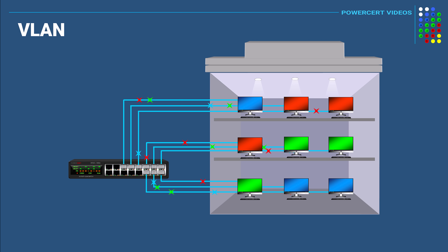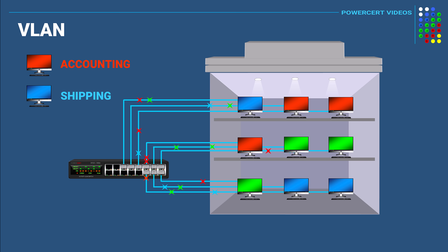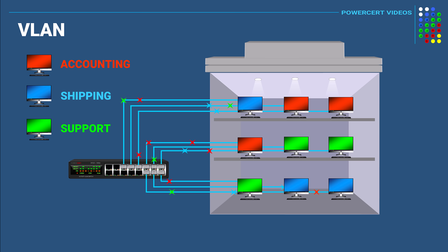So as an example, let's say that you have a three-story office building. In this building you have computers that belong to certain departments that are mixed in with other computers that belong to other departments on the same floor. The red computers represent the accounting department, the blue computers represent the shipping department, and the green computers represent the support department. All these computers from these different departments are all connected to a switch, and they are all on one segment on a local area network or LAN. So all the network broadcast traffic from the different departments are mixed in with other departments, meaning the departments are all seeing each other's network traffic.